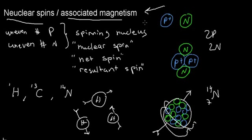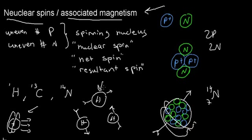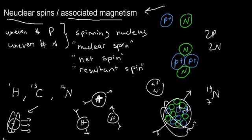Now let's discuss associated magnetism — it sounds daunting but it's simple. It's a physical law that whenever you have a charge in motion it creates a magnetic field around it. Consider a hydrogen atom: its nucleus has a proton, giving it a positive charge. A nucleus is always going to be positively charged because there's always at least one proton in it. So this positively charged nucleus has spin — it has both charge and motion — and therefore it has a magnetic field associated with it. That's associated magnetism.